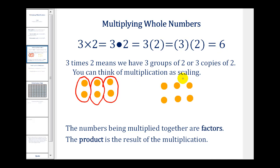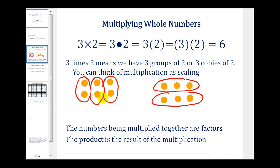You might also notice that if we view this as 2 groups of 3, the total is still 6. This is due to the fact that when we change the order of multiplication, the answer or the product is still the same. 3 times 2 is equal to 2 times 3. This is a property we'll take a look at in just a moment.